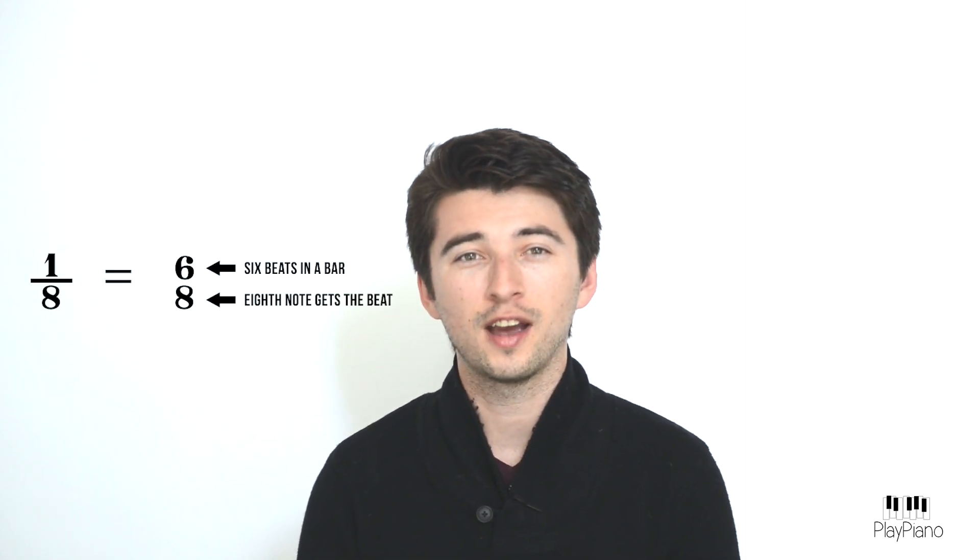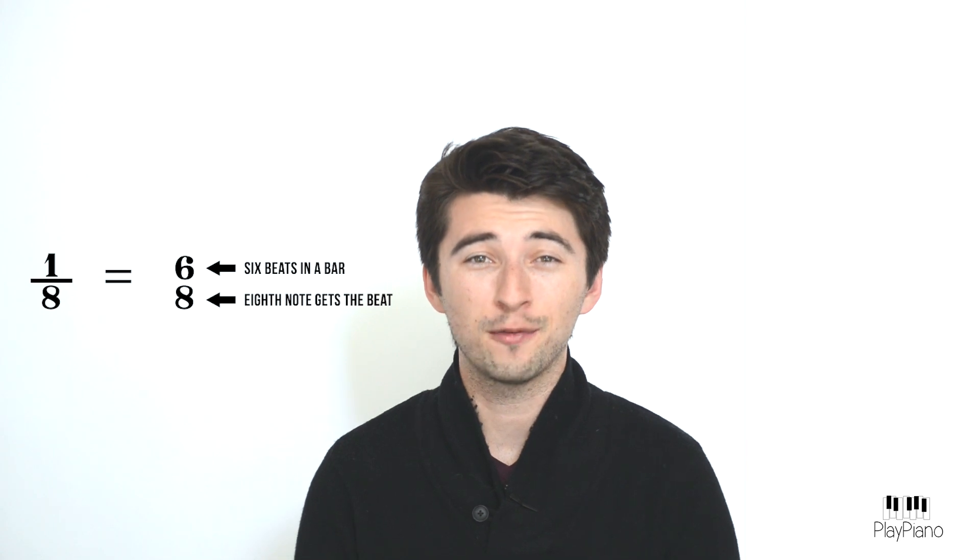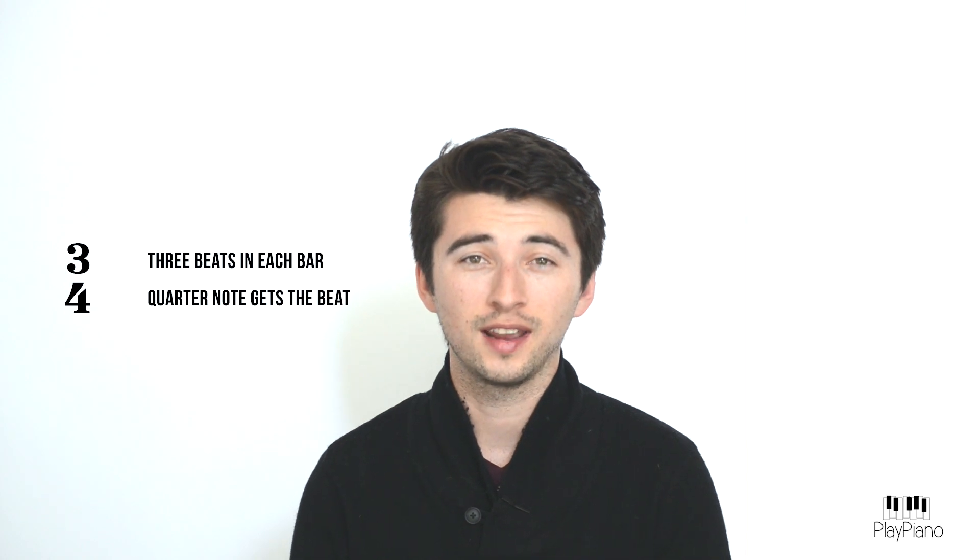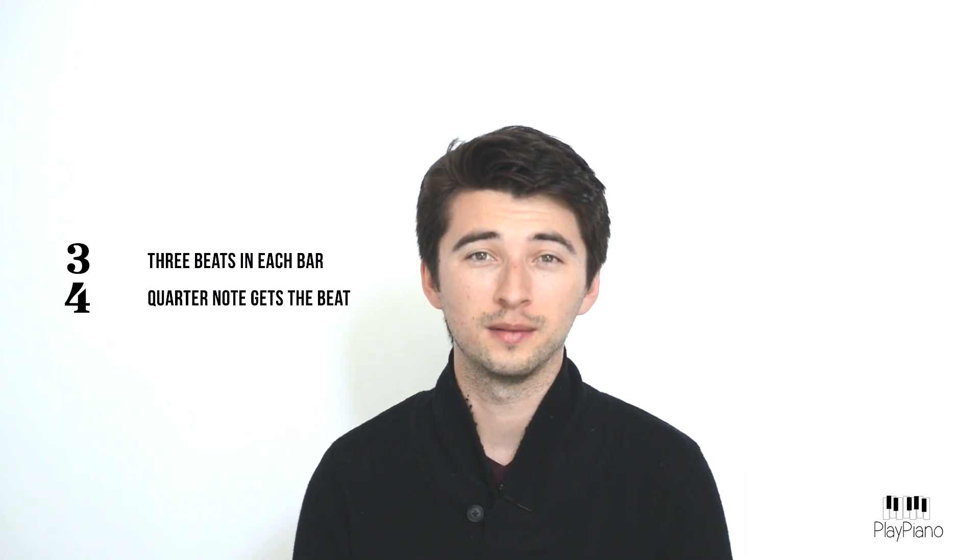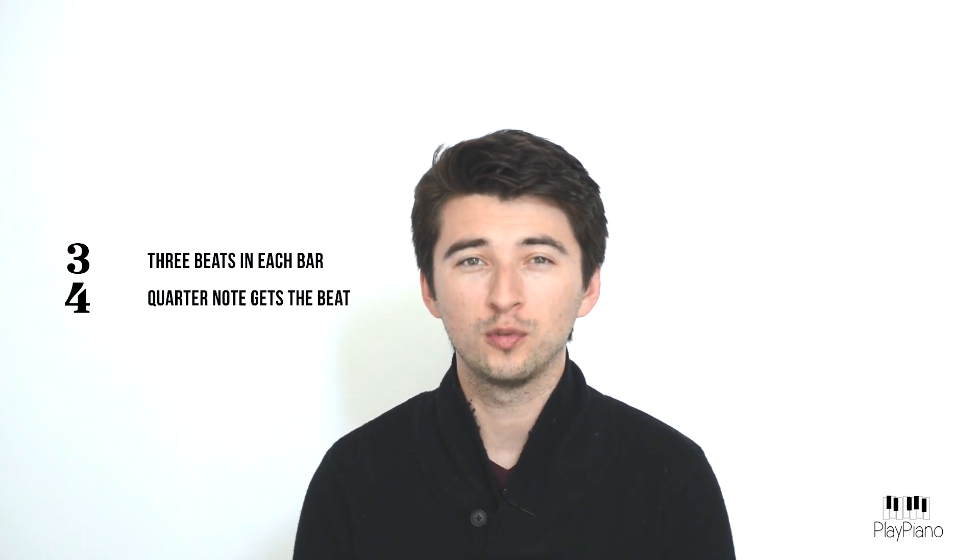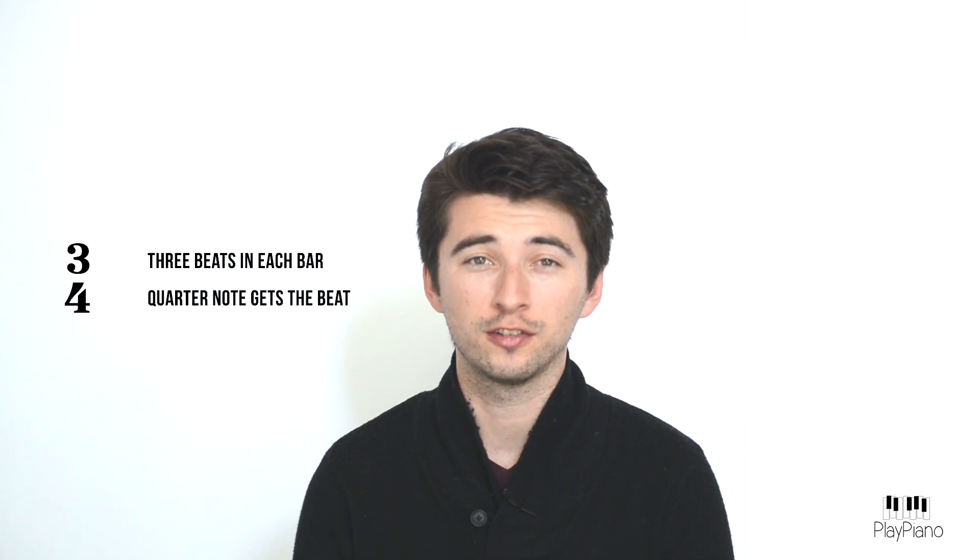Let's look at some time signatures that musicians see every day and try to read the layout of what the music will look like. This time signature is 3-4, which means that three beats are in each bar and the quarter note gets the beat. You will find that most waltzes are written in this time signature.